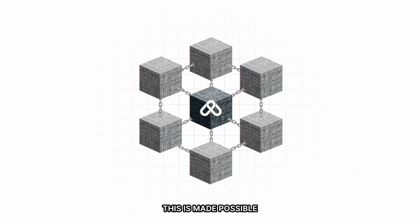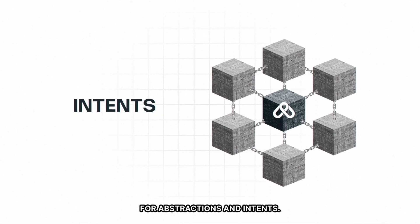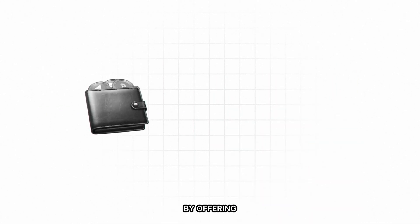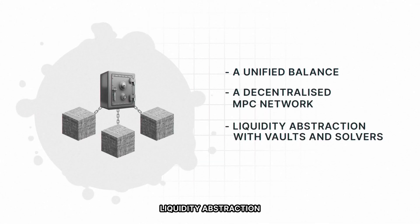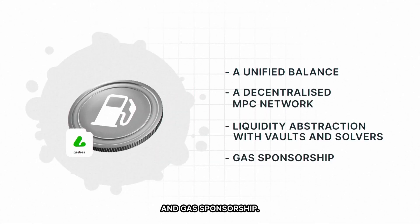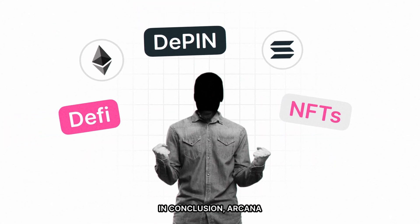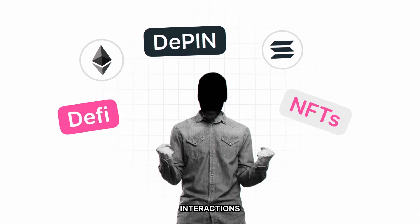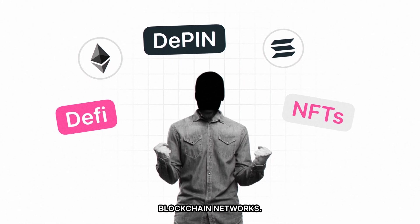This is made possible with Arcana's modular layer 1 for abstractions and intents. Arcana enables chain abstraction by offering a unified balance, a decentralized MPC network, liquidity abstraction with vaults and solvers, and gas sponsorship. In conclusion, Arcana's chain abstraction has the potential to revolutionize users' interactions with decentralized applications and blockchain networks.